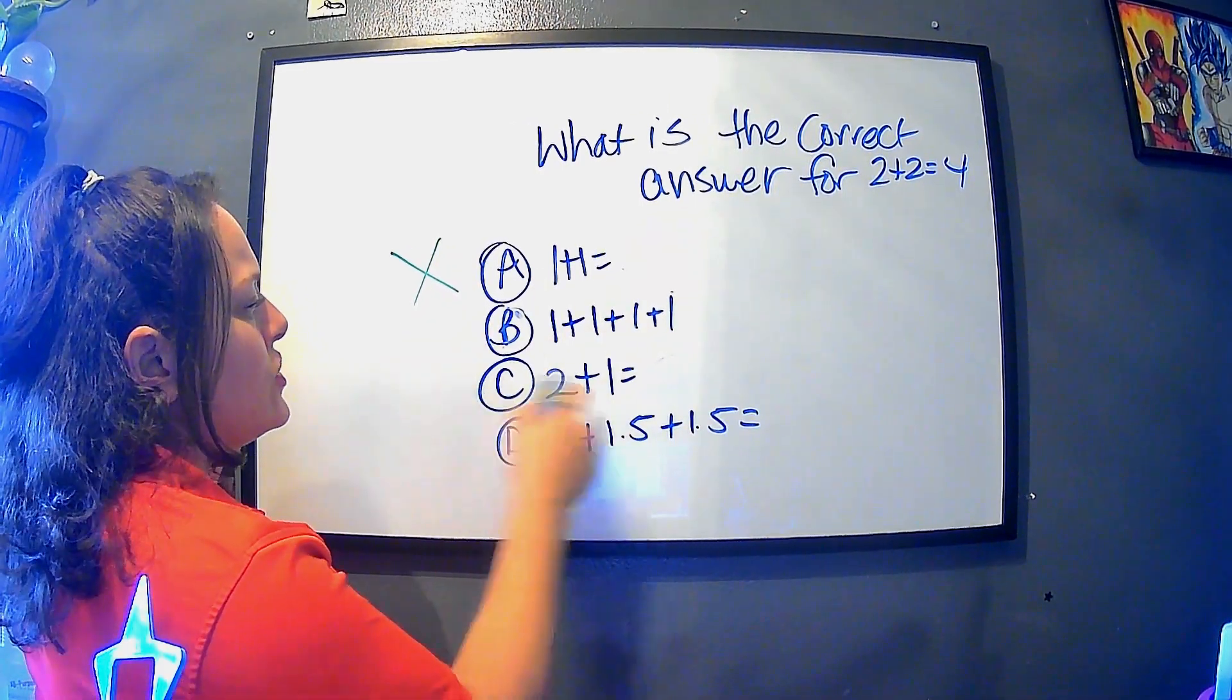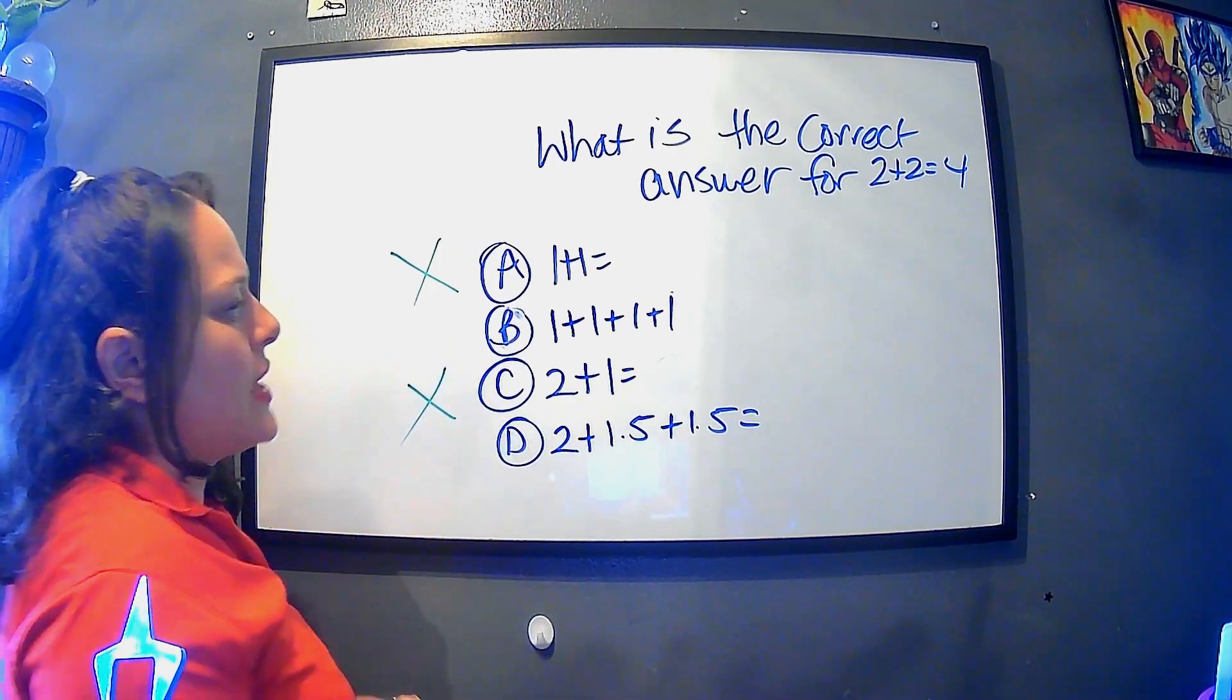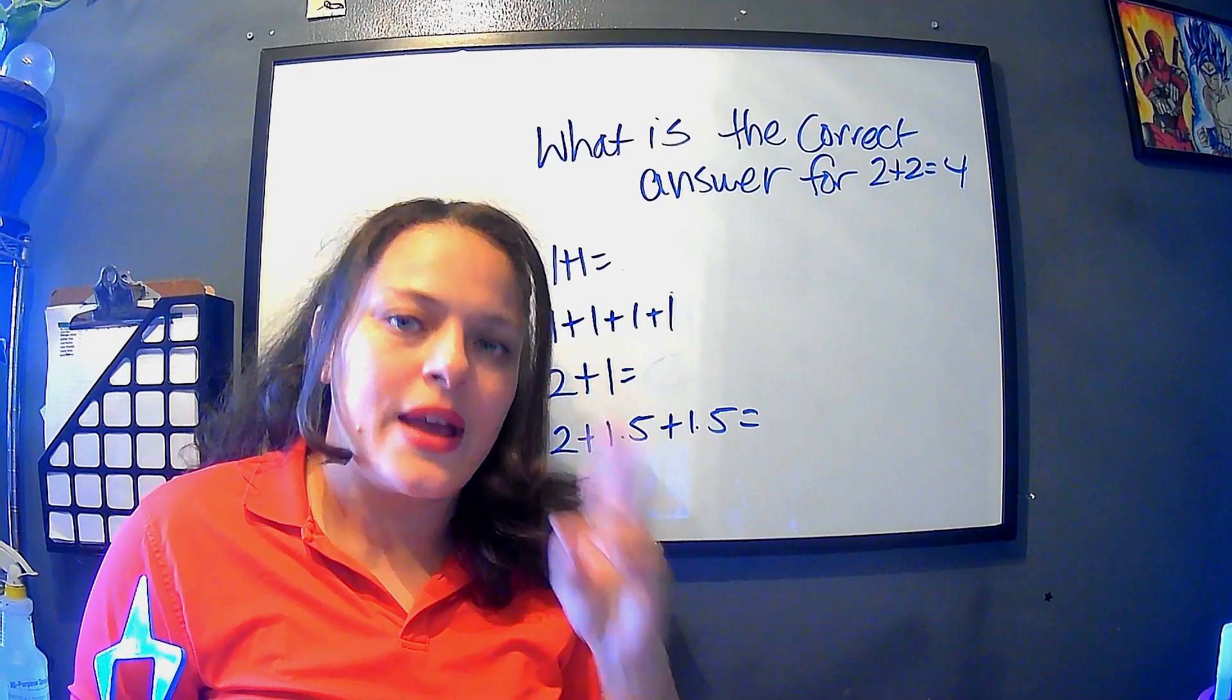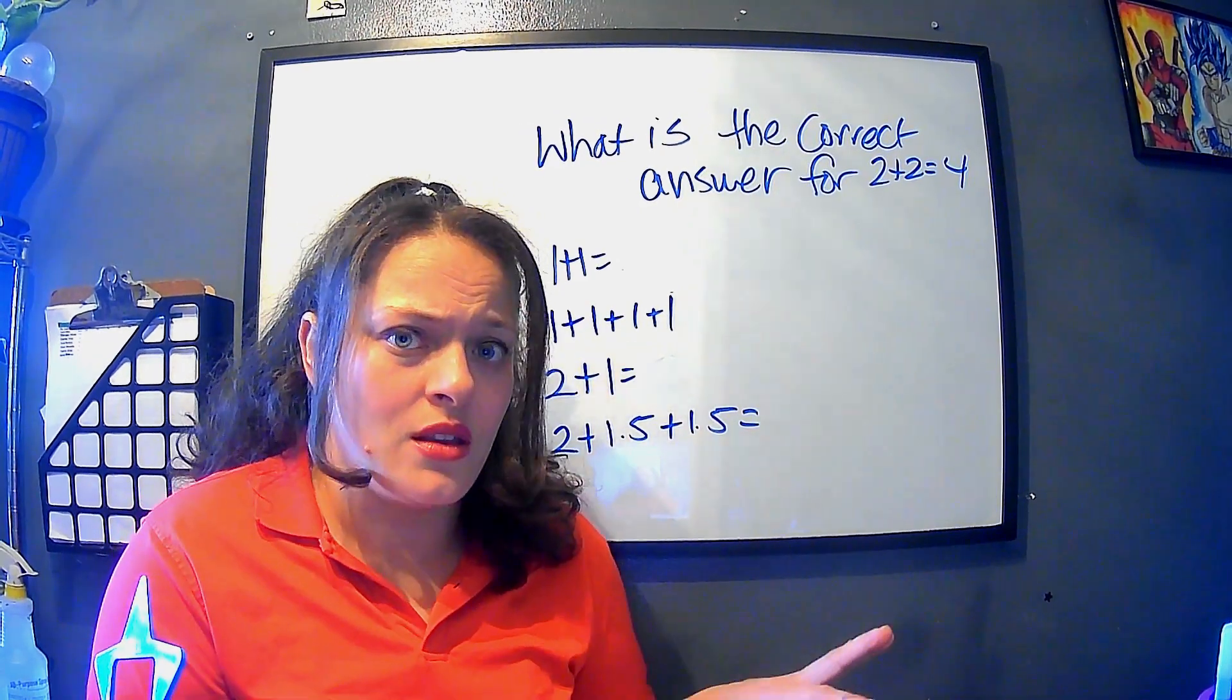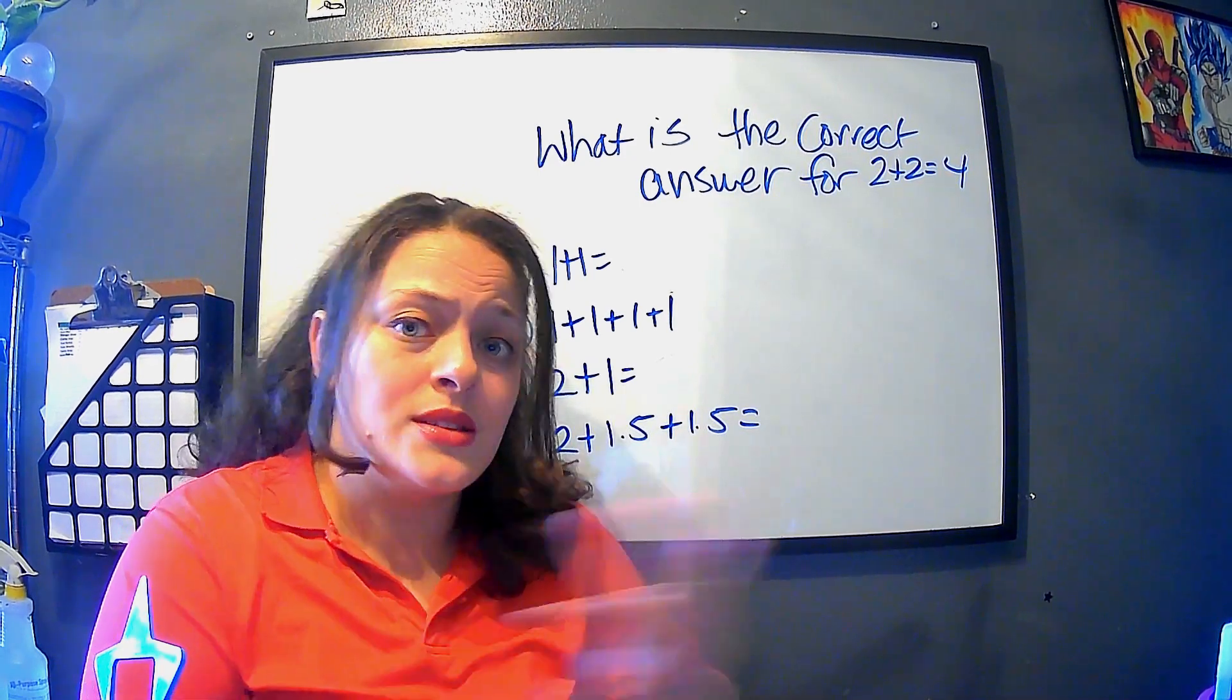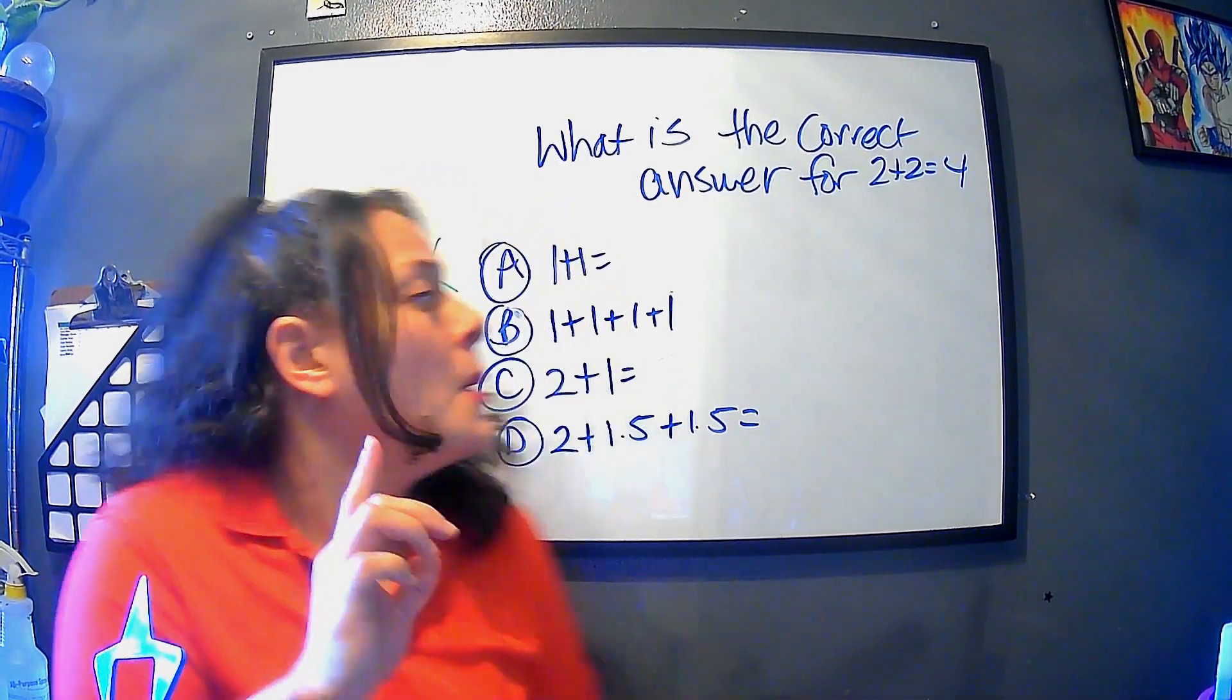And then we definitely have the 2 plus 1, which we know for sure isn't that one. What happens with multiple choice is always there's two answers that are very close, and then the other two are definitely not right. Or sometimes there's three definitely not right and one is not correct and one of them is. But in this case...